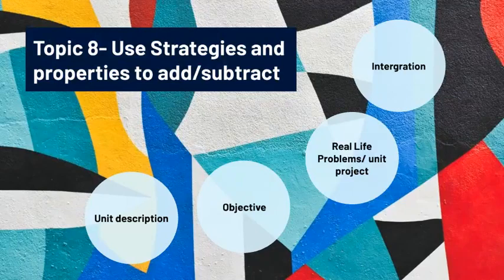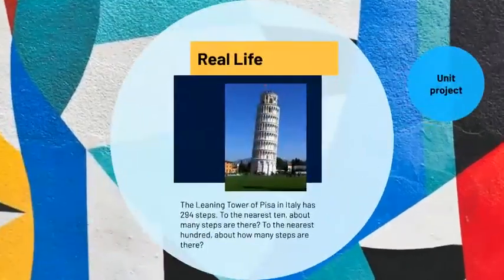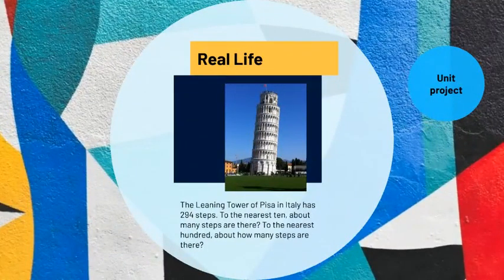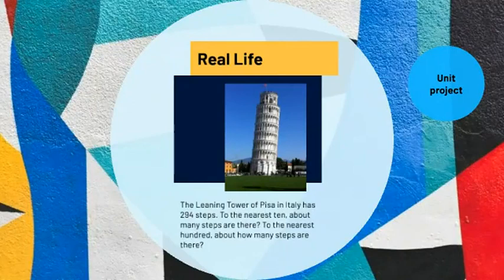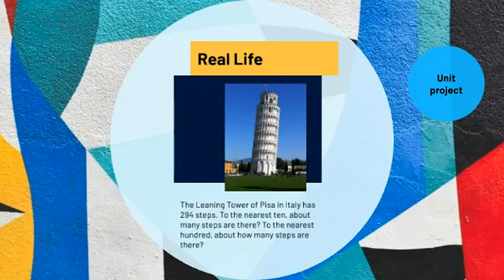Let's talk about why we're going to study addition, subtraction, and rounding — let's see what the real-life problem is. For example, the Leaning Tower of Pisa in Italy has 294 steps. If I ask, to the nearest tens, how many steps are there — you're going to be doing rounding. And if I ask what it rounds to to the nearest hundred, it's going to be different as well. We use rounding pretty much in our daily life, and we use addition and subtraction as well.